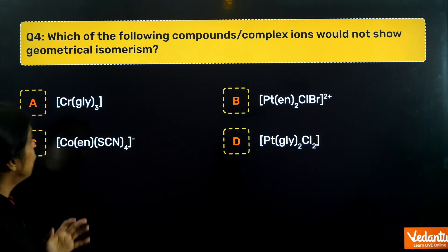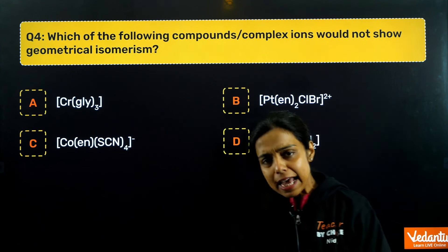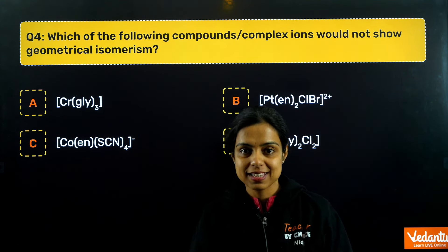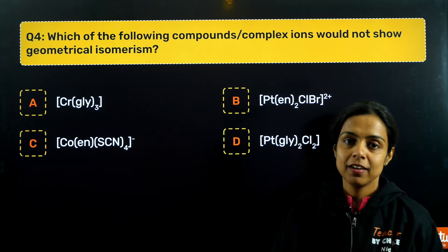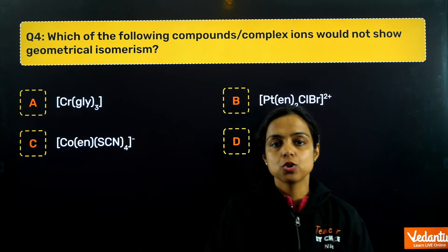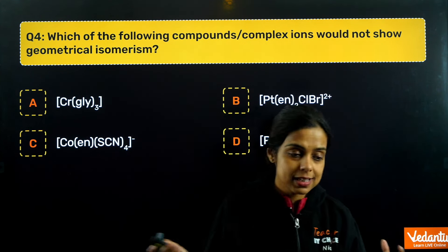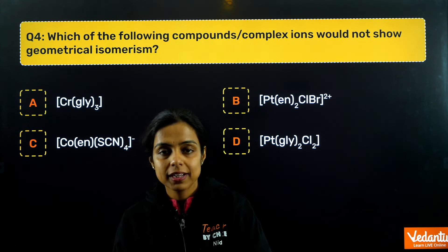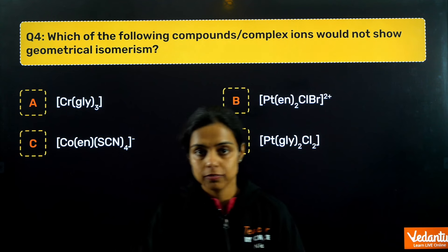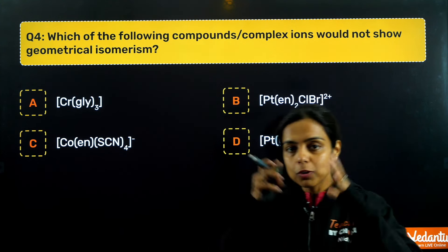Question four asks: which of the following compounds or complex ions would not show geometrical isomerism? This is from coordination compounds, where isomerism is an important topic. You can refer to inorganic chemistry books like J.D. Lee for charts and tables on geometrical and optical isomers. You should know which complex types show which kinds of isomerism — stereoisomerism and structural isomerism are both important.